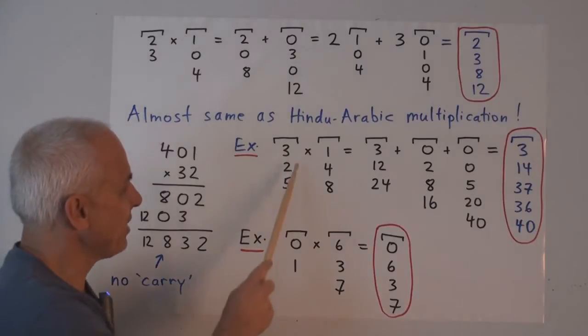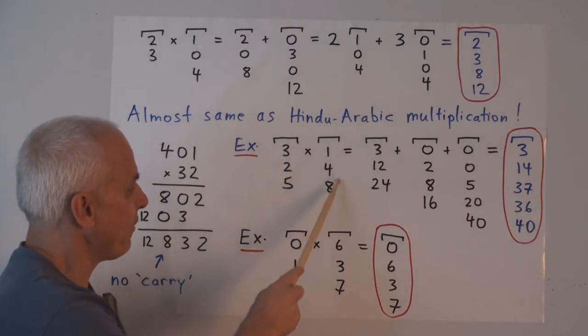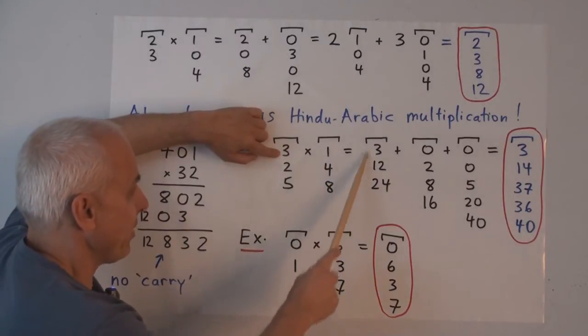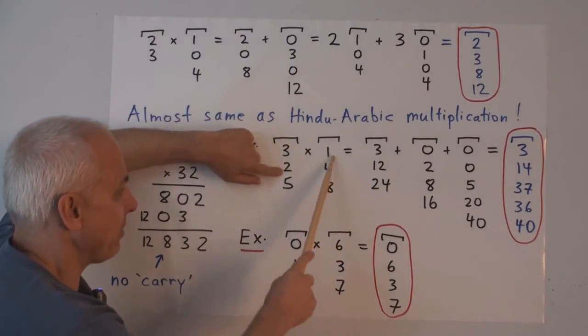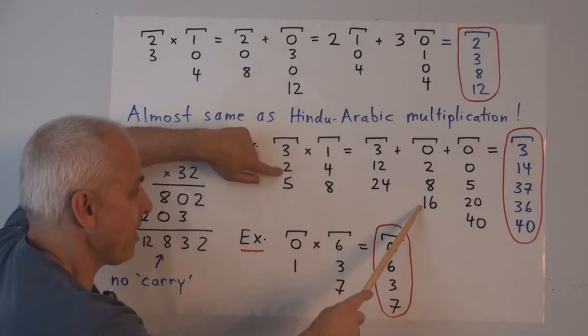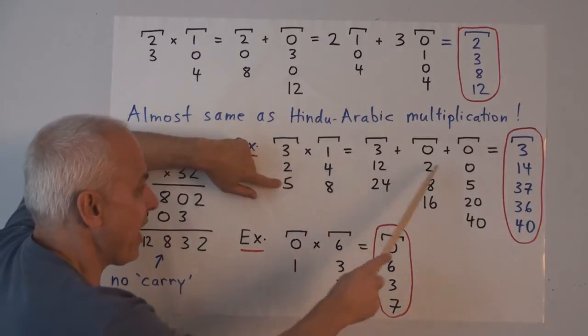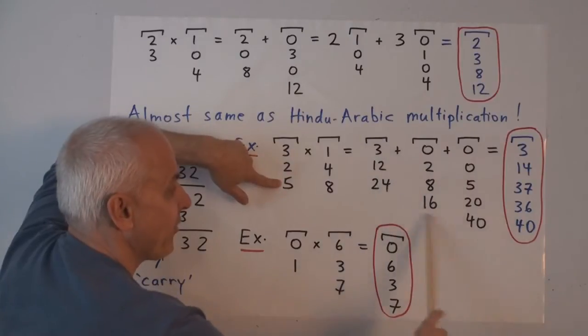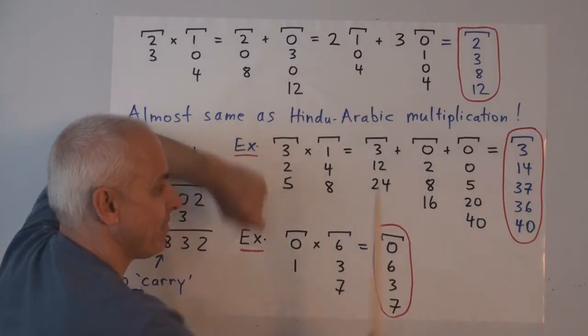And there's another example you can check that, say, 3, 2, 5 times 1, 4, 0 is obtained by first multiplying this by 3, multiplying it by 2 and shifting down 1, multiplying this by 5 and shifting down 2, and then adding all the way across, like that.